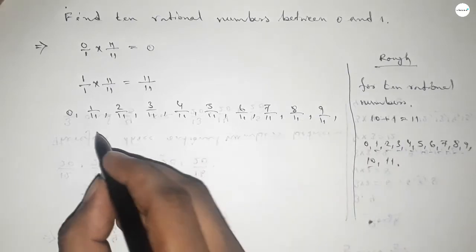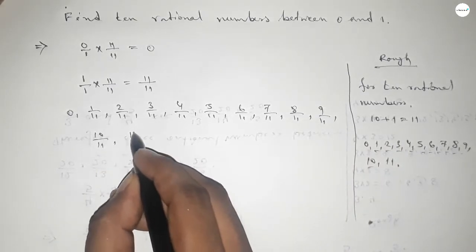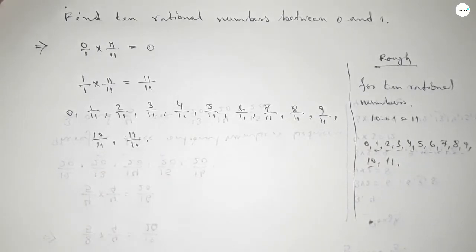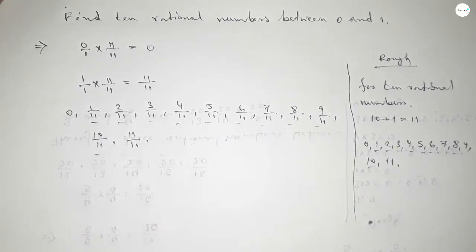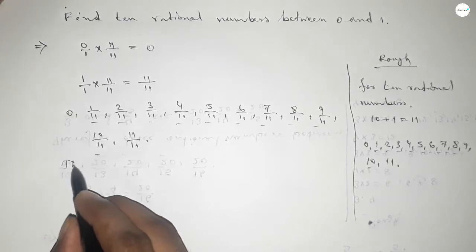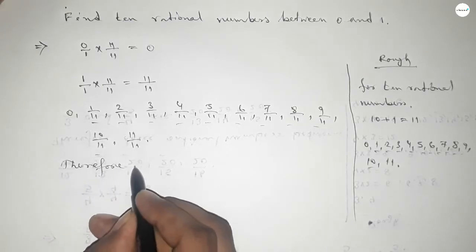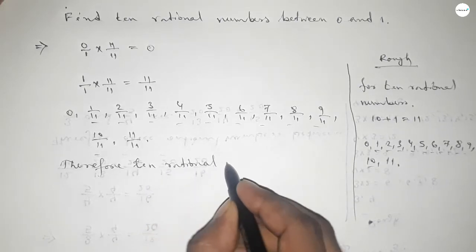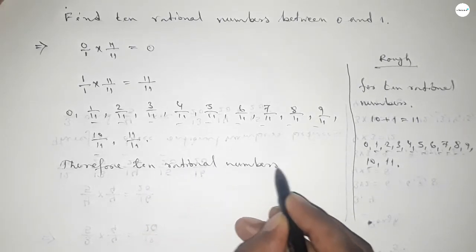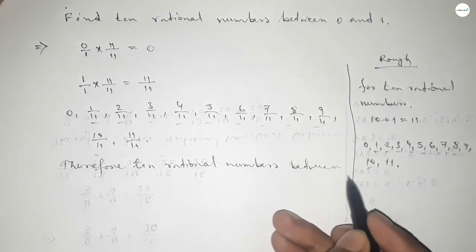And 10 over 11, and last one 11 over 11. And among these, these are the required 10 rational numbers between 0 to 1. So therefore, 10 rational numbers between 0 and 1.